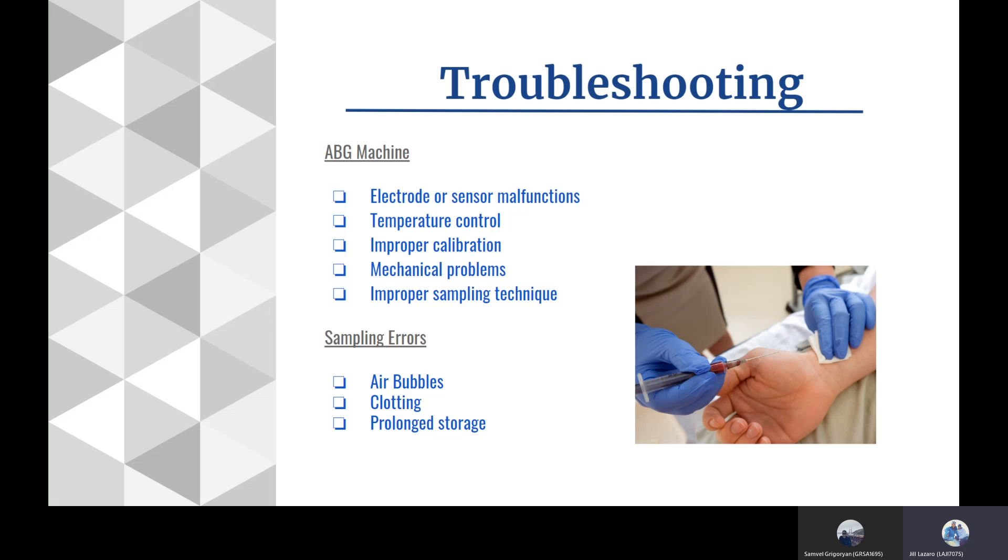When we go into machines, there are a couple of things we can do to troubleshoot. We oftentimes have errors we need to figure out. In regards to troubleshooting, the first is ABG machine errors. Common issues include electrode or sensor malfunction, improper temperature control, improper calibration, mechanical problems such as something not working or jammed up, and improper sample techniques.